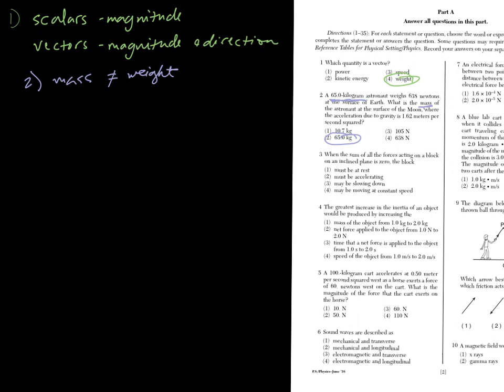Number three: when the sum of all the forces acting on a block on an inclined plane is zero, sum of all the forces is zero. So we're talking about net force. This leads into equilibrium. When we're at equilibrium, we have two different states. Either we're at rest, or moving with constant speed. So looking at our choices, we can't say that it's at rest. It can be, but it's not a must. Must be accelerating, that's false. Maybe slowing down, that's false. So it may be moving at a constant speed.